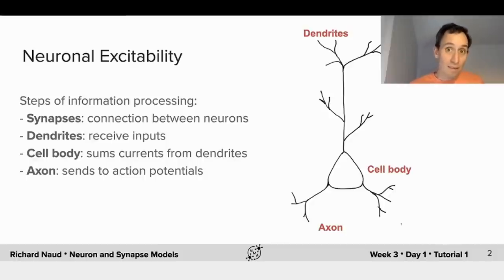There are dendrites, which are receiving inputs from synapses. And there's the synapses that are the connections with other neurons.